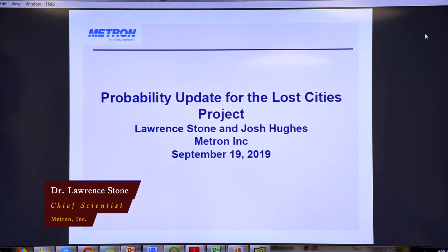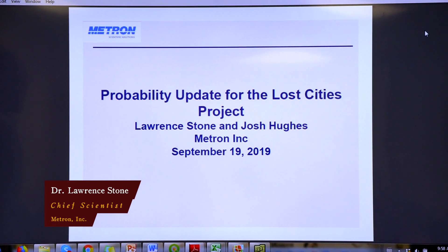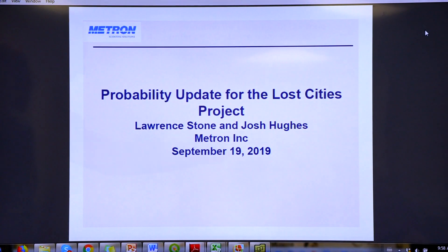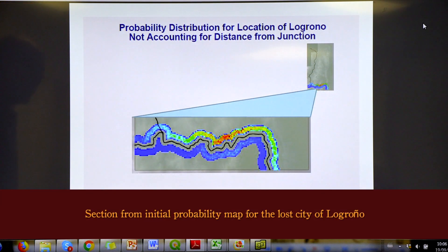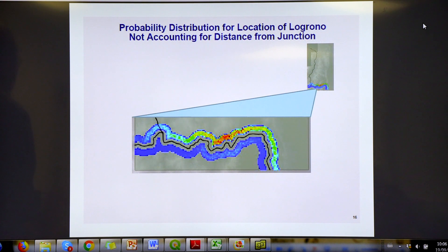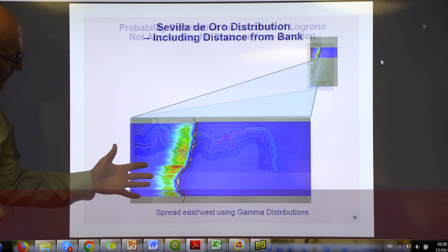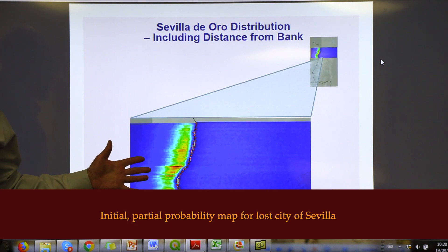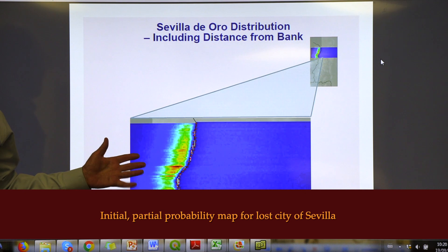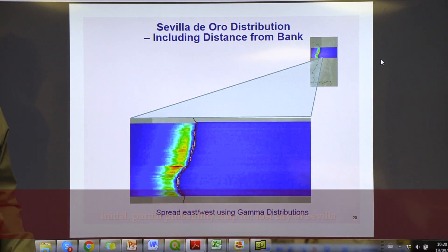I'm going to give you a progress report of what we've been doing with the data that you've given us. Red means high — it goes red, orange, yellow, green, blue. So this is the density of the points with their weights. Yes, with their weights. So it's the likelihood that you would find Lagrangio inside each of the cells — the probability. These are really proportional to probabilities in each one of these cells. So if you looked at a single cell, it would be a very small number.